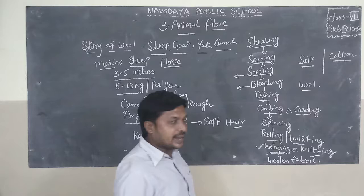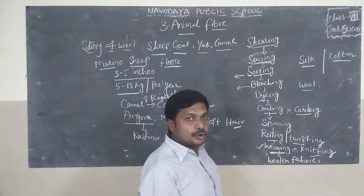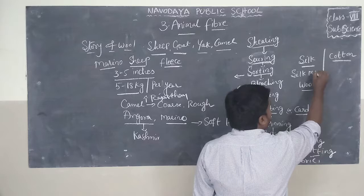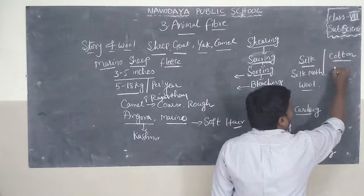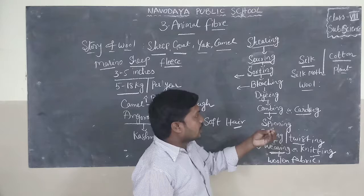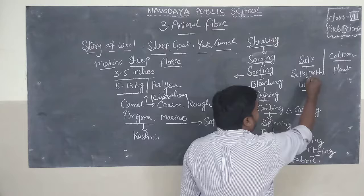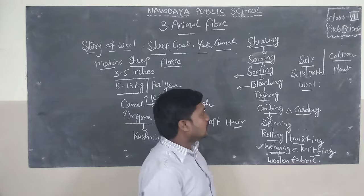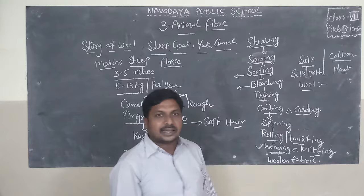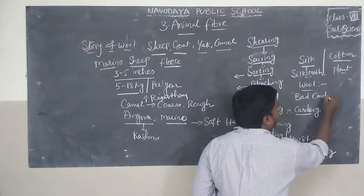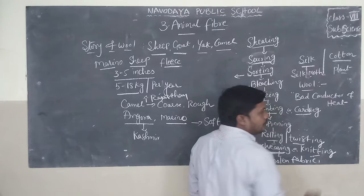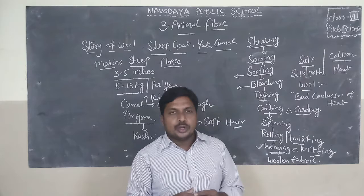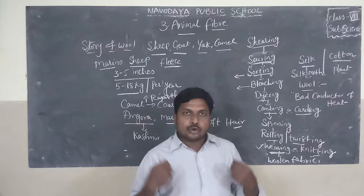Next, I will explain the differences between silk and cotton. Silk is obtained from the silk moth, and cotton is obtained from the cotton plant. Silk is used to prepare silk cloths, and cotton is used to prepare cotton cloths. Wool is the bad conductor of heat — very important. Wool is helpful to prepare sweaters, mufflers, long coats, and table covers.